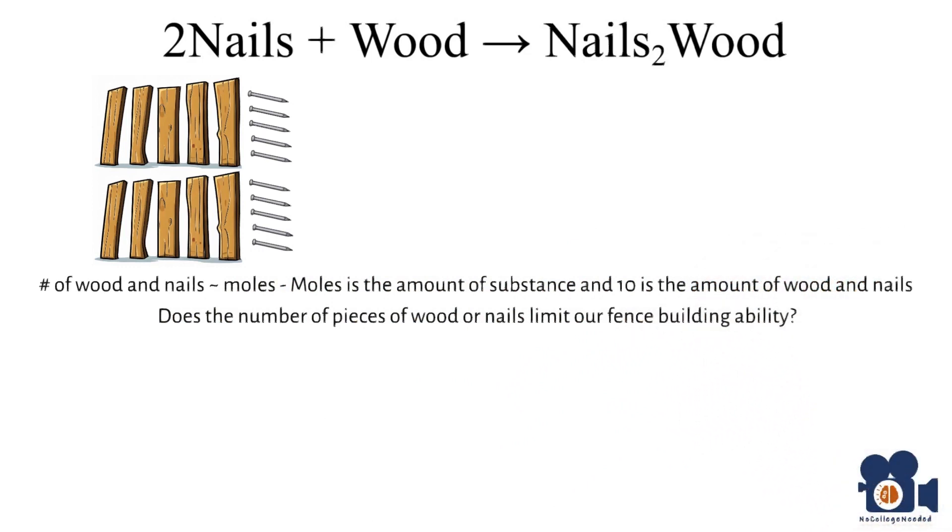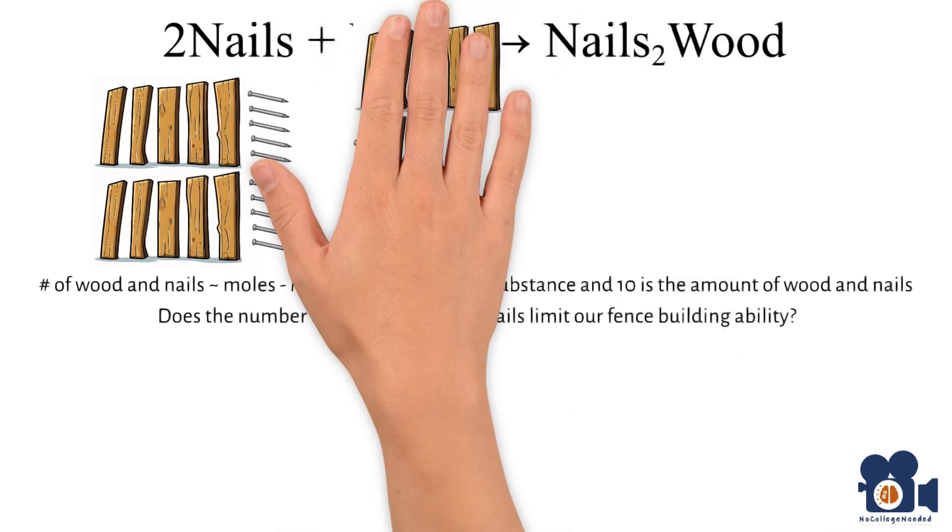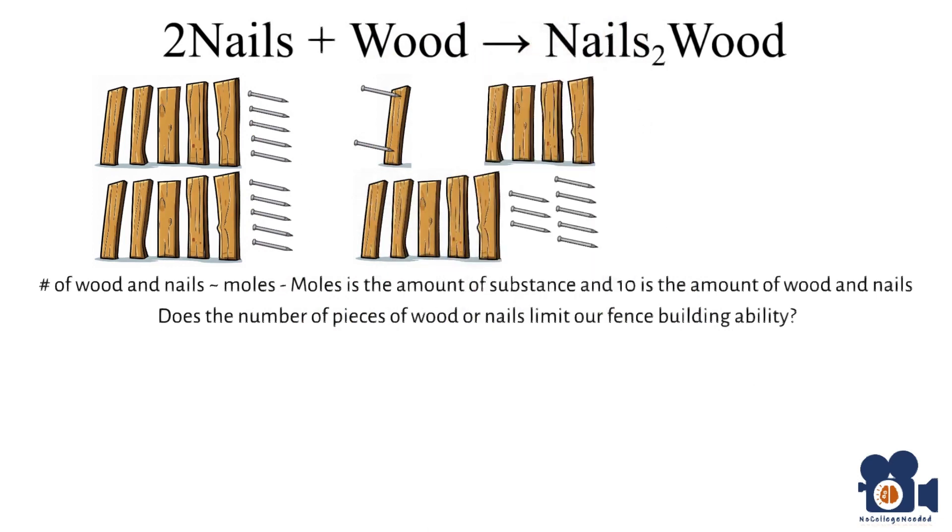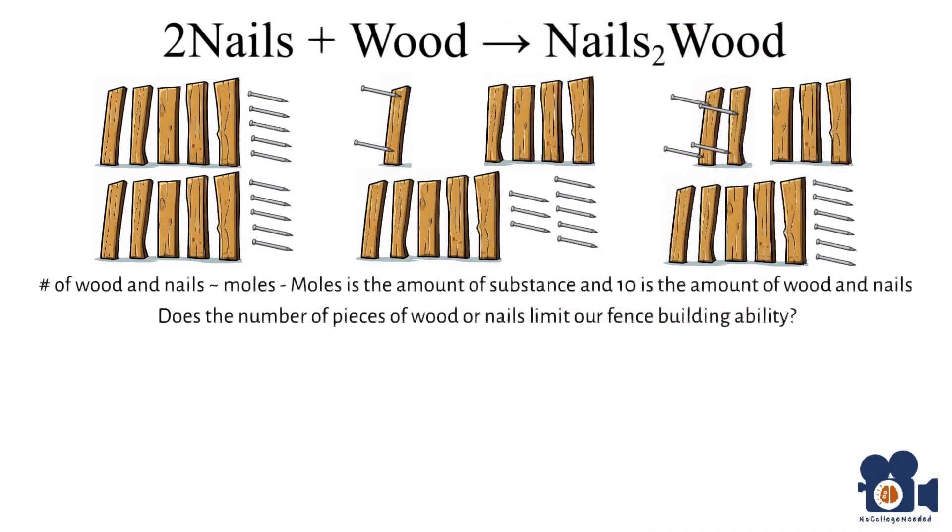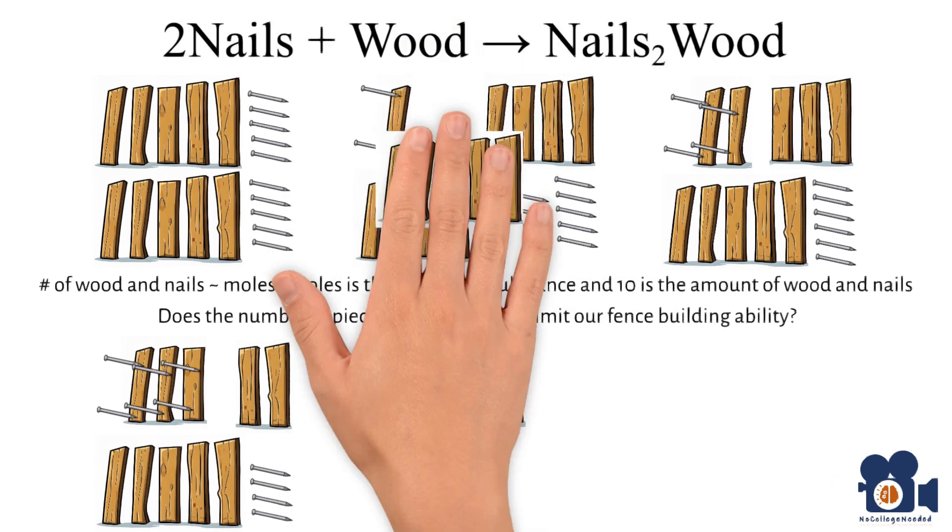So does the number of pieces of wood or nails limit our fence building ability? Let's find out while we start to build the fence. The first piece starts out fine and we have nine pieces of wood and eight nails left. Second is okay too, now eight pieces of wood and six nails left. Third is seven pieces of wood and four nails left. Fourth is six pieces of wood and two nails left.